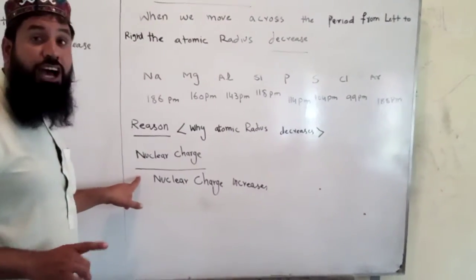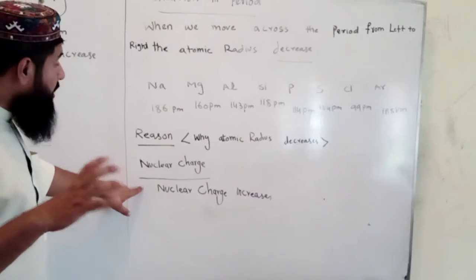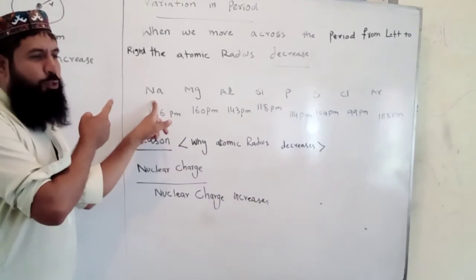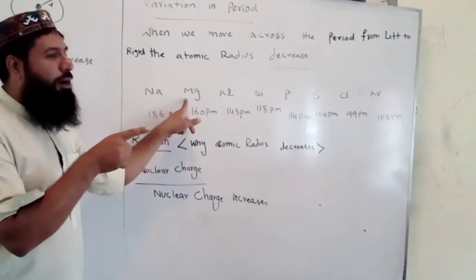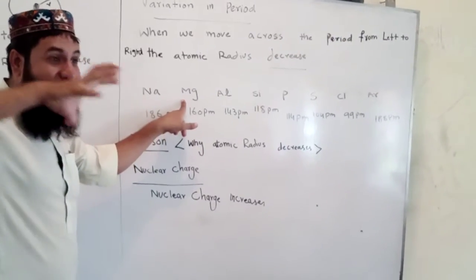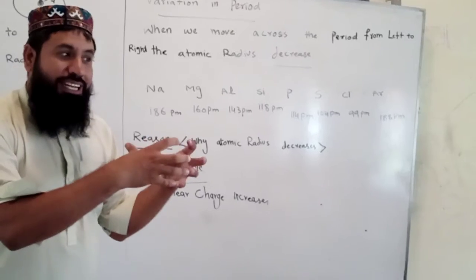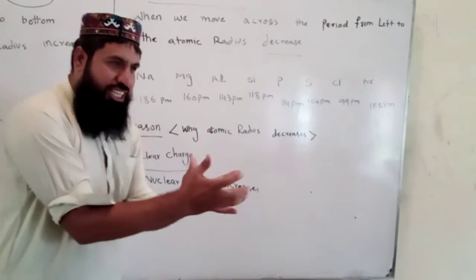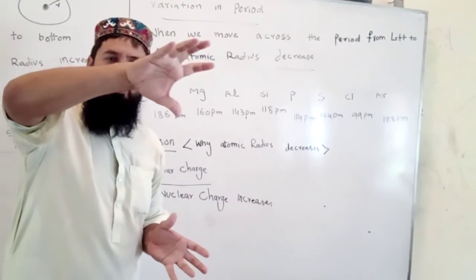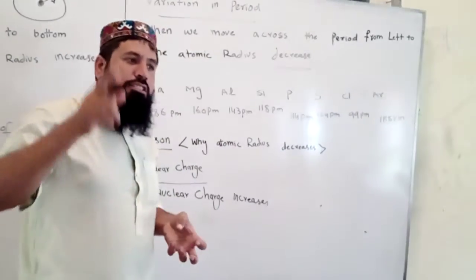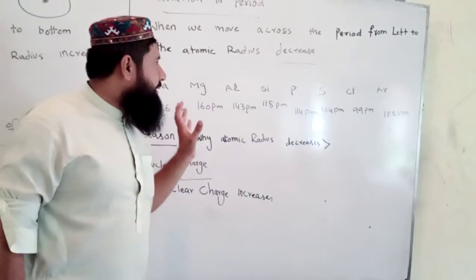Why does this decrease occur? The reason is nuclear charge. When we move from left to right in the period, the nuclear charge increases. Sodium has atomic number 11 — it has 11 protons. Magnesium has atomic number 12 — it has 12 protons. Aluminum has 13, silicon has 14. The number of protons gradually increases. As nuclear charge increases, it attracts the outermost electrons more strongly toward the nucleus, causing the outermost shell to condense. That is why atomic radius decreases across the period from left to right.